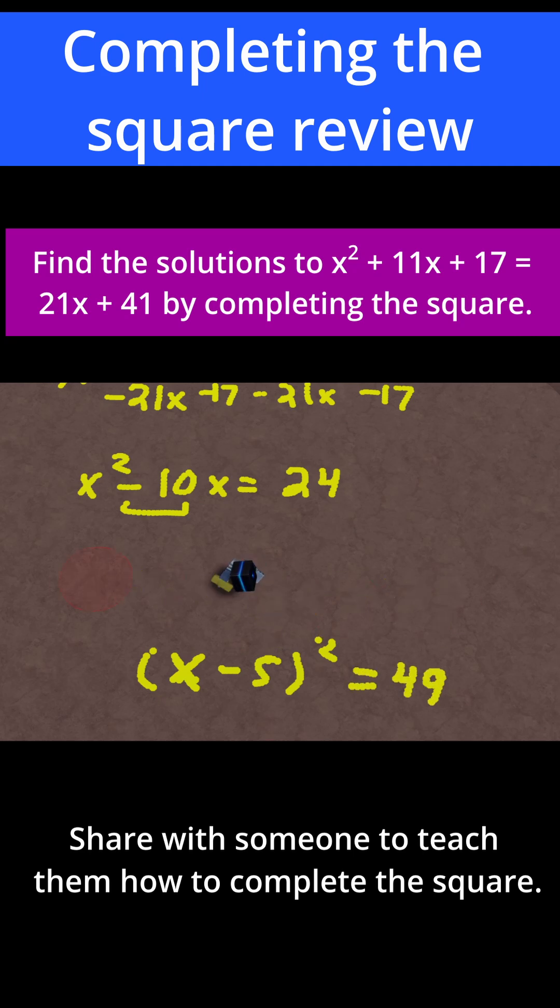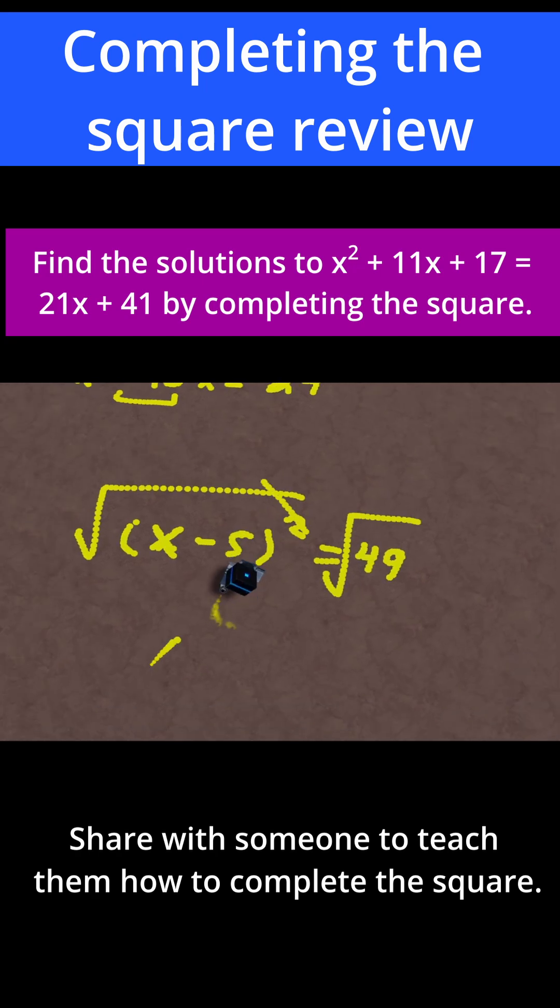Let me erase all this stuff here. And now, we're ready to take a square root. So let's just take the square root of both sides to cancel out that squared. The square root of the square will cancel here, and we're left with x minus 5 is equal to... The square root of 49 is going to be plus or minus 7. And then let's add 5 to both sides.